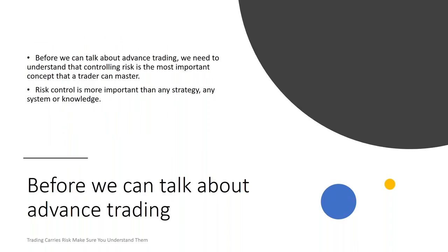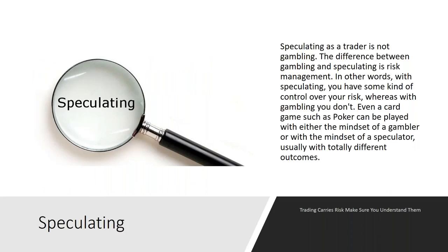Before we can talk about advanced trading, we need to understand that controlling risk is the most important concept a trader can master. Risk control is more important than any strategy, any system, or any bit of knowledge. Speculating as a trader is not gambling. The difference between gambling and speculating is risk management — with speculating, you have some kind of control over your risk, whereas with gambling you don't. Even a card game such as poker can be played with either the mindset of a gambler or a speculator, usually with totally different outcomes.